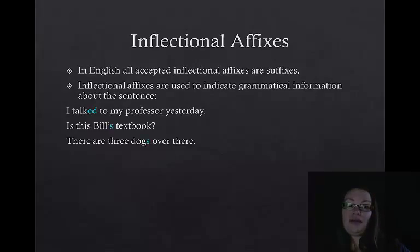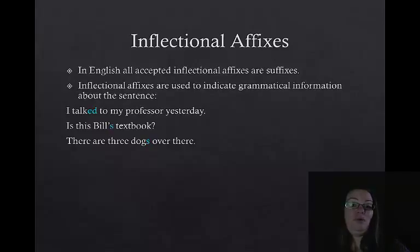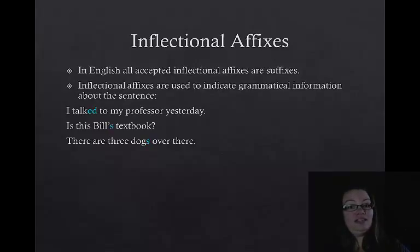Here's another one: There are three dogs over there. Here we have another -s, but in this case it gives us the information that there is more than one dog — that dog is plural. Notice that the -s in Bill's and the -s in dogs look exactly the same, but they carry different bits of grammatical information. Inflectional morphemes might look the same but carry different grammatical meanings.